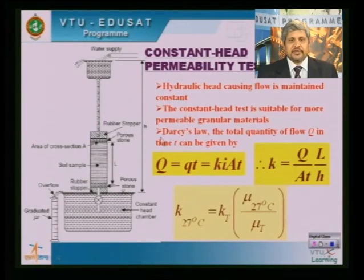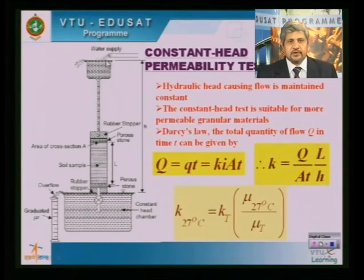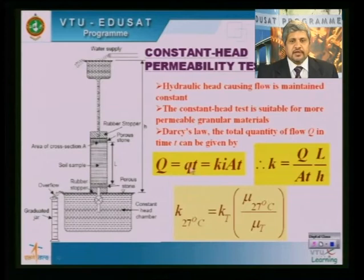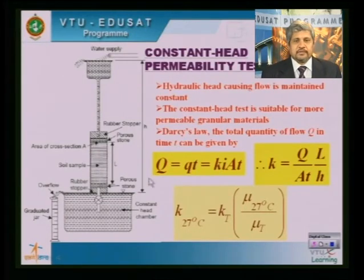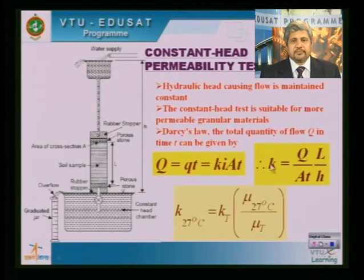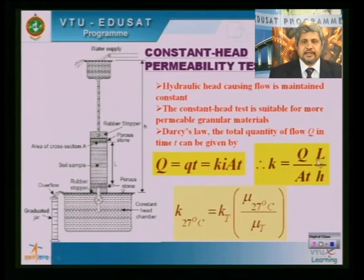Once I know the total discharge in a constant head permeability test — that is why it is called so, because we maintain the water level constant throughout — we collect the water discharged from the soil specimen, called Q. Q can be read directly using the graduated jar. From Darcy's law, Q is equal to K·I·A·T, where I is the hydraulic gradient causing the flow, A is the area of the soil specimen, and T is the time interval over which Q was collected. Once you have all this data, the job is to determine K, the coefficient of permeability.